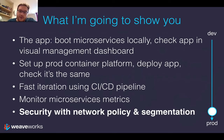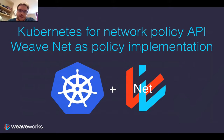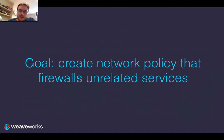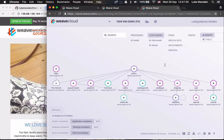Last section. We're going to secure the app with network policy and segmentation. The reason we need to do this is that this client is really paranoid and insists that different parts of the application that don't strictly need to talk to each other don't. To implement this, we're going to use Kubernetes network policy description language and Weavenet's policy implementation to actually enforce it. The goal is to create a network policy that firewalls unrelated services from each other.